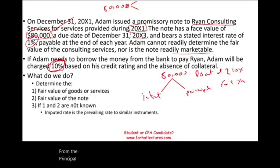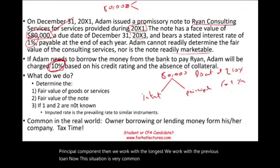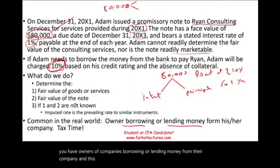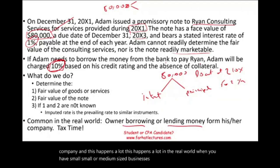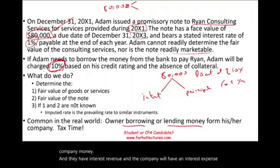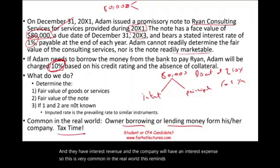This situation is very common in the real world. When owners of companies borrow or lend money from their company — which happens frequently in small and medium-sized businesses — they have to charge themselves interest, or they lend the company money and have interest revenue while the company records interest expense. This is very common in practice.